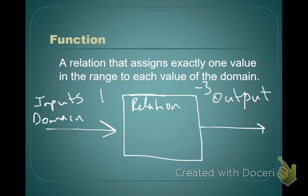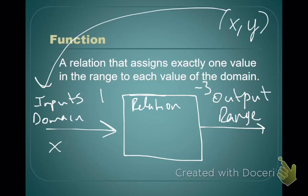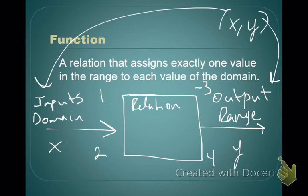Domain is very often the x's in an ordered pair. Remember that our relations are just ordered pairs — x's and y's. Our outputs are also known as the range, and the range is represented by y. So if we put a 1 in and the relation spits out a negative 3, or if we put a 2 in and it spits out a 4, as long as when we put an input in we get exactly one output from it, then this is a function.